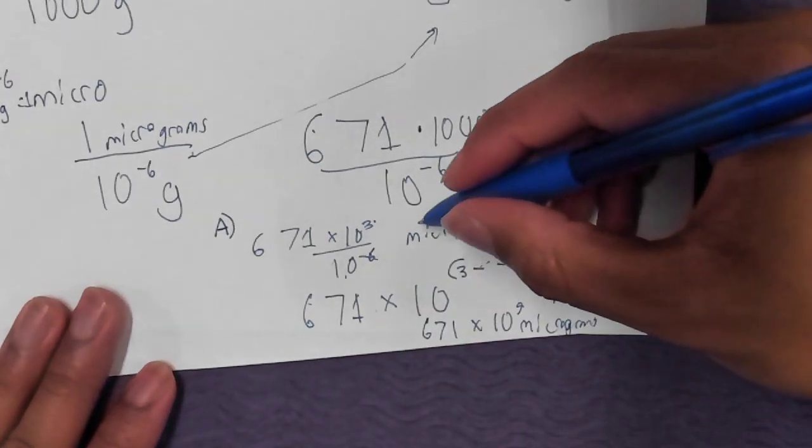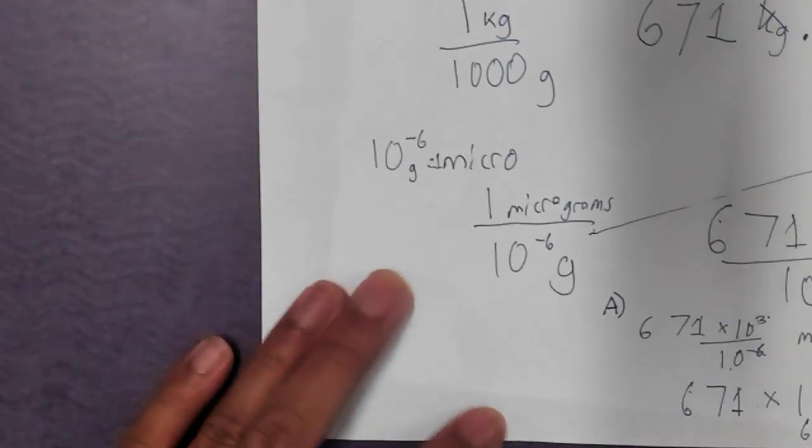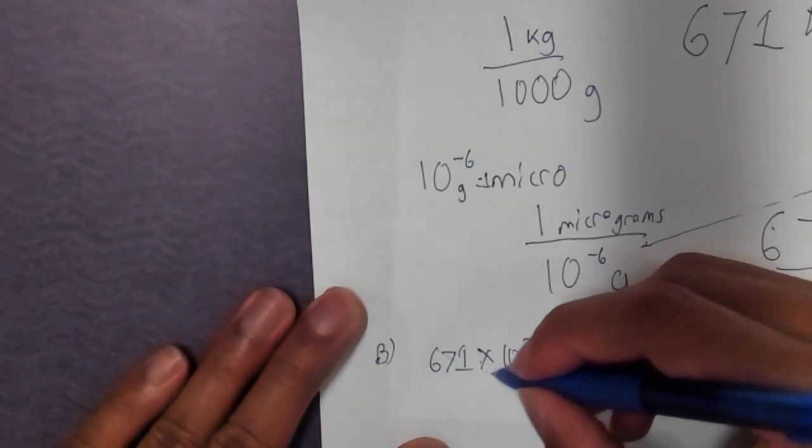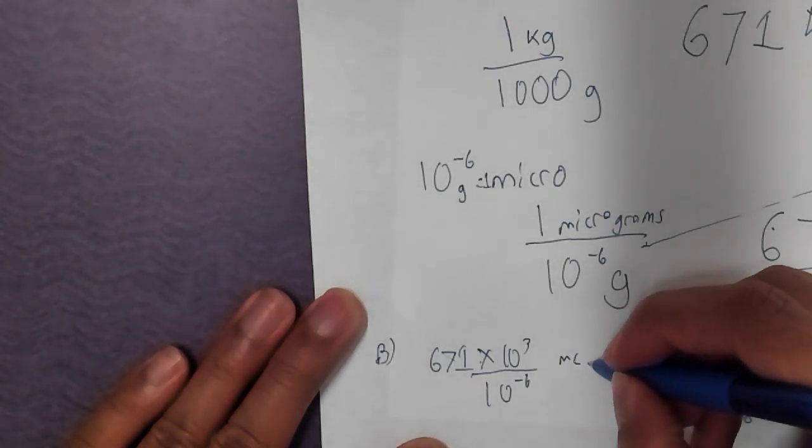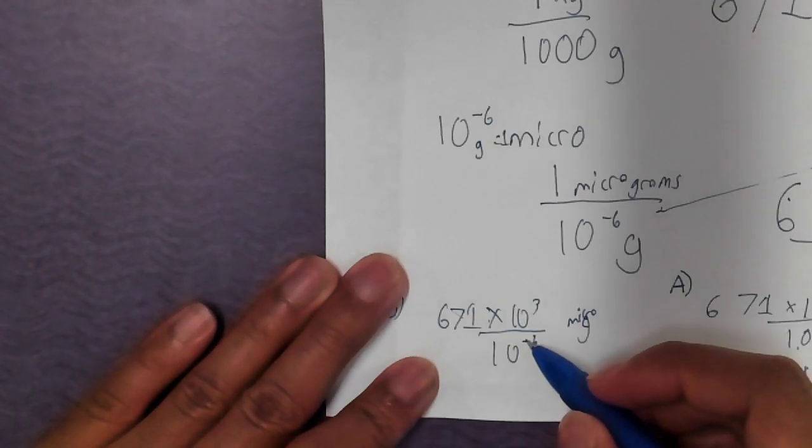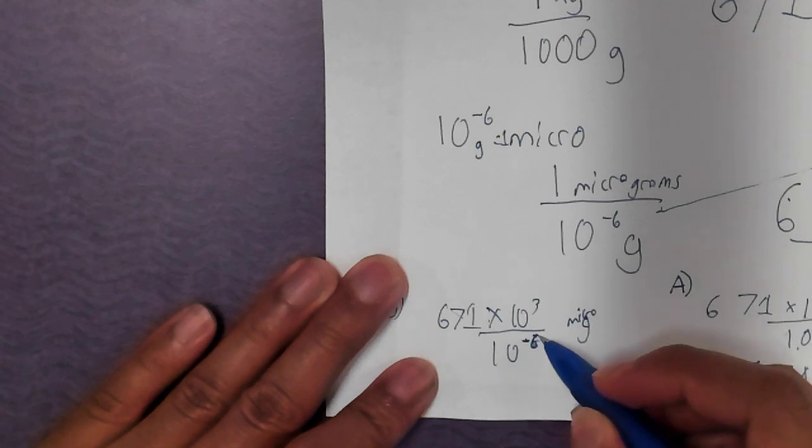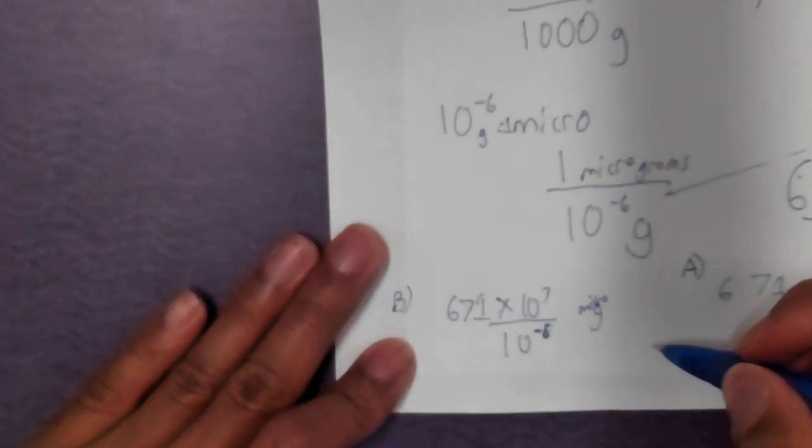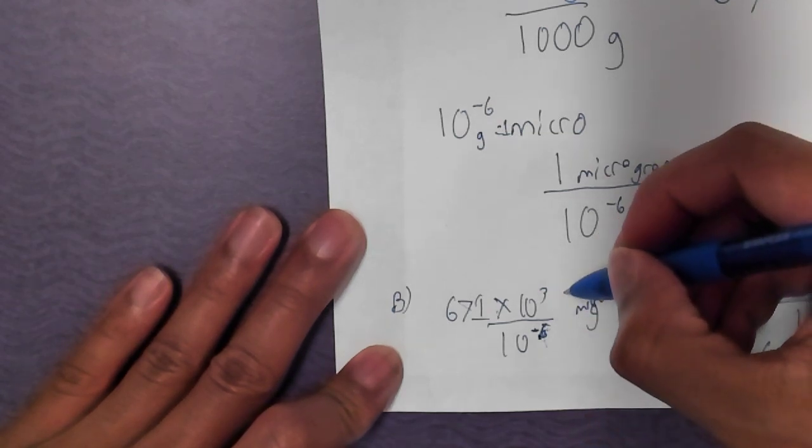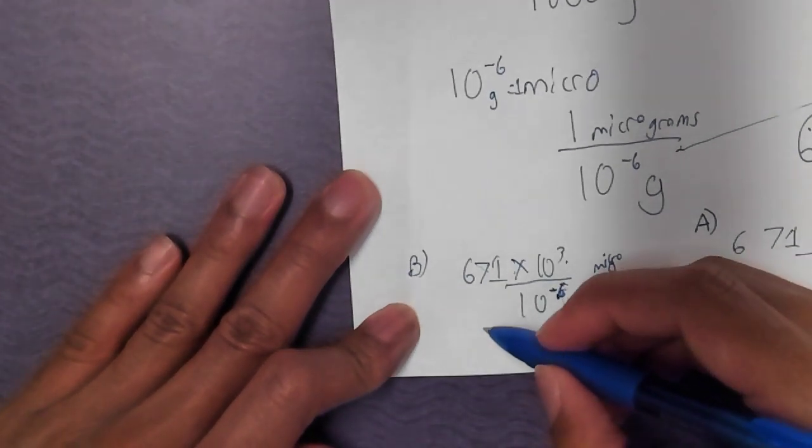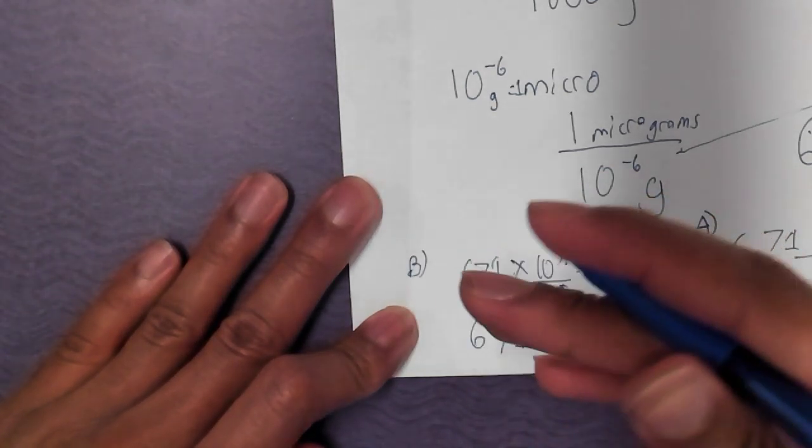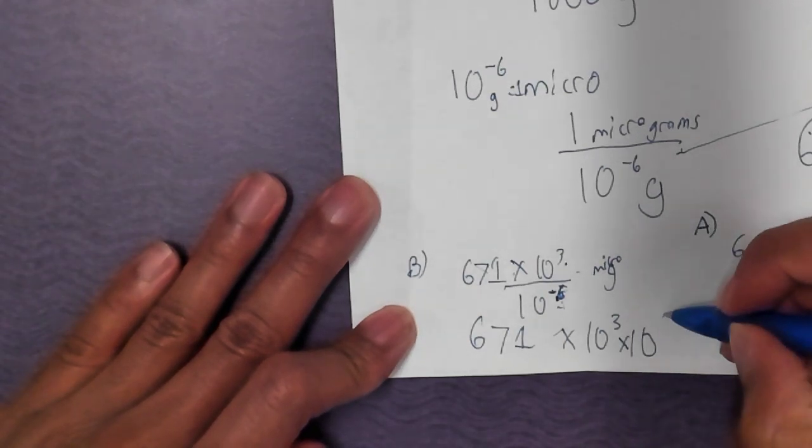There's two ways for us to solve that expression. One is to actually divide it. The rule for dividing numbers like this when it's two numbers that have the same base, they both have base 10, you divide. You take this exponent on the top minus the exponent on the bottom. In this method, you take the exponent on the top, 3, minus the exponent on the bottom, negative 6. So our new expression, 671 times 10 to the 3 minus the negative 6 power micrograms.